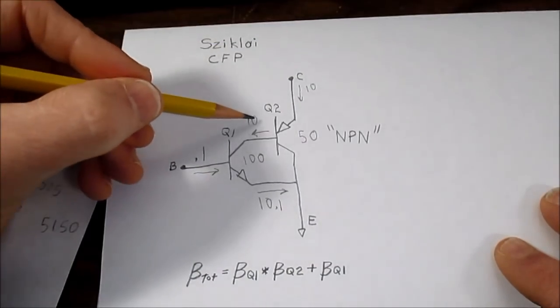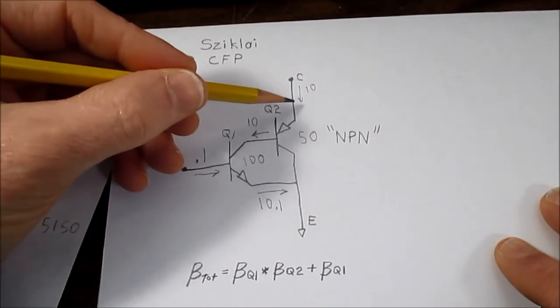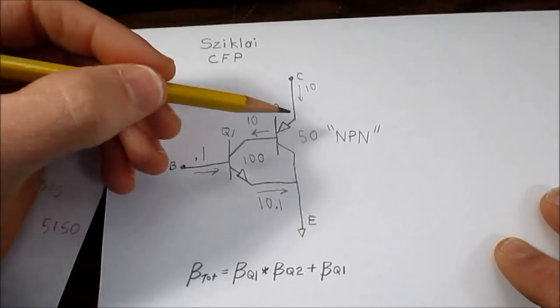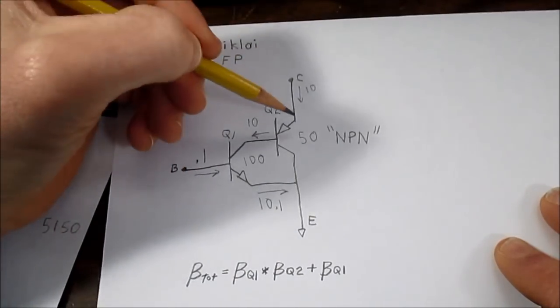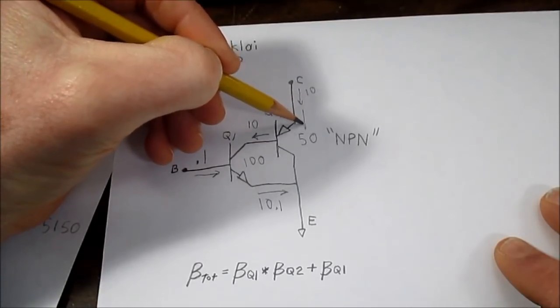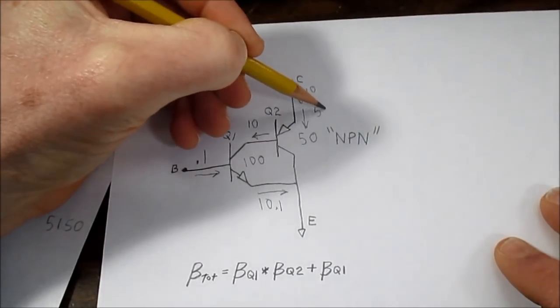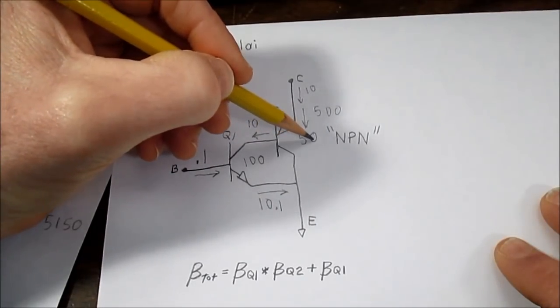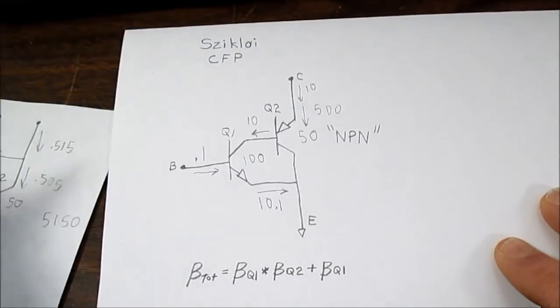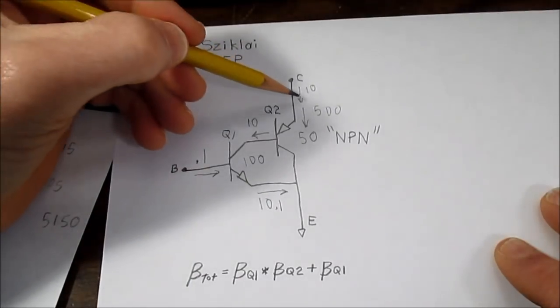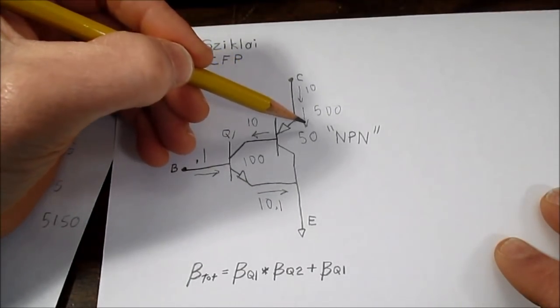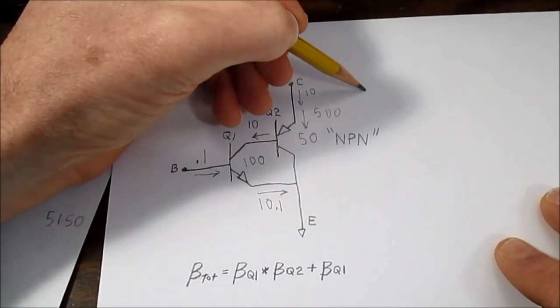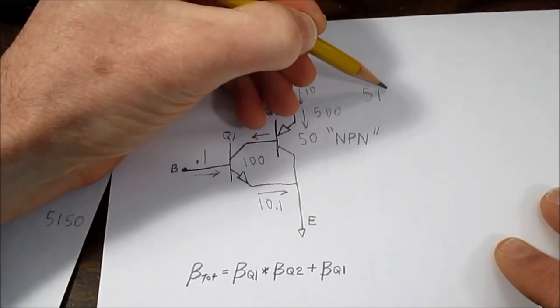The reason for that, you have the 10 milliamps flowing here and the base current also flowing there. Now you have 10 milliamps flowing through the base of the PNP transistor. That means we have another current here of 500 milliamps. Ten times the gain of 50 here is 500 milliamps. But we have those two currents in this leg so we have to add them together, so the total current would be 510 milliamps.